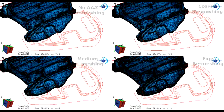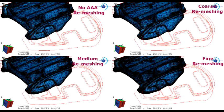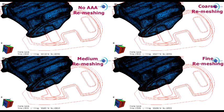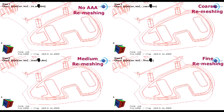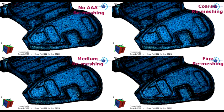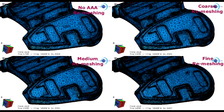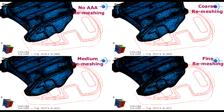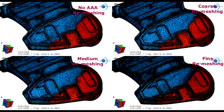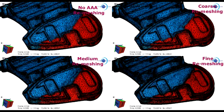The AAA remeshing technique offers by default three levels of refinement: coarse, medium, and fine. The user can of course set a custom refinement when they have acquired a little more experience with the remeshing technique. This video shows the difference between the same part computed without the AAA remeshing at the top left, the coarse refinement at the top right, the medium at the bottom left, and the fine refinement at the bottom right. Of course, the refinement level has an impact on the computation time, and a multi-step analysis is usually recommended.